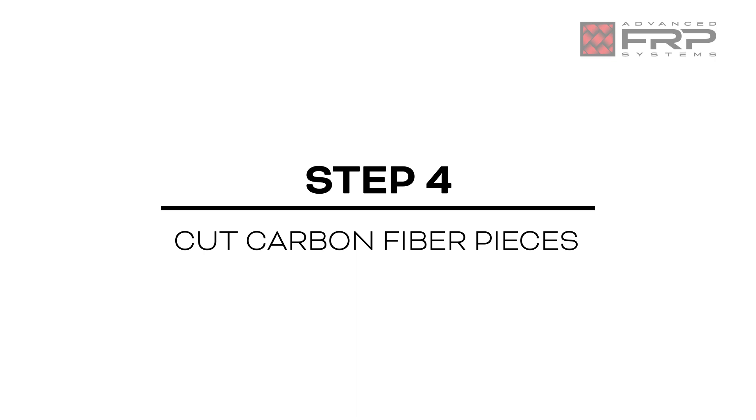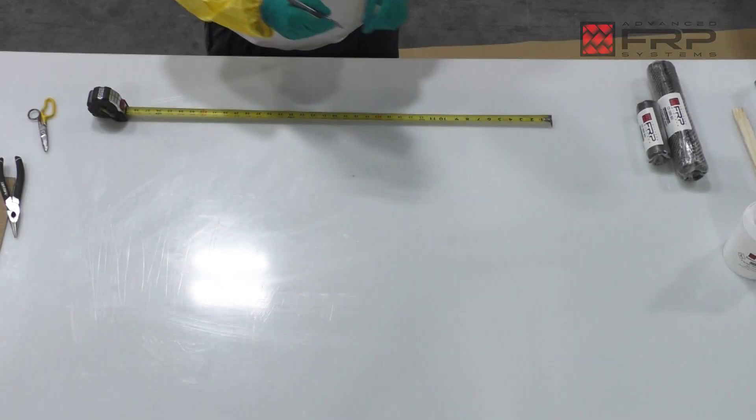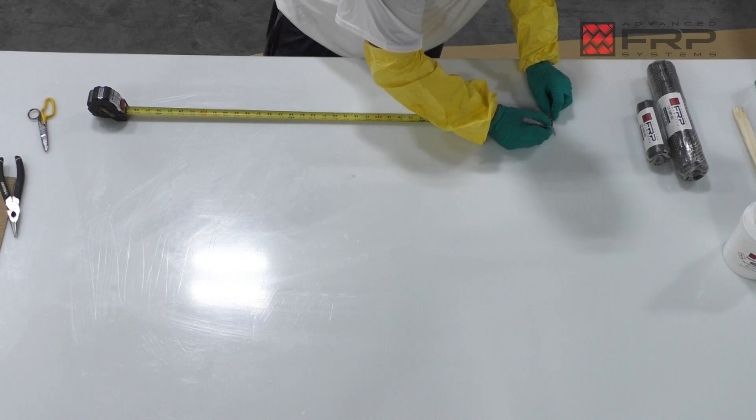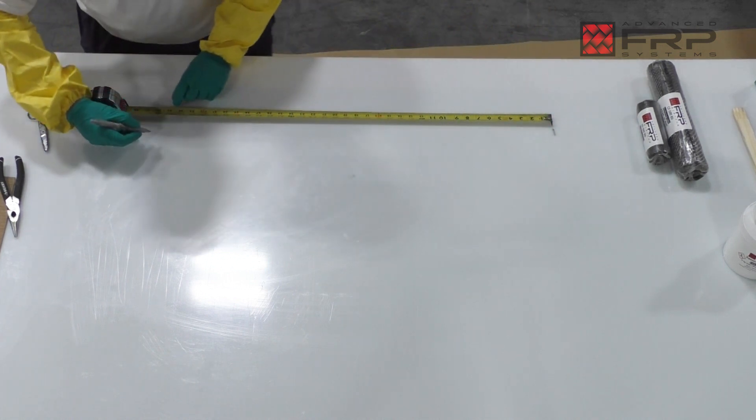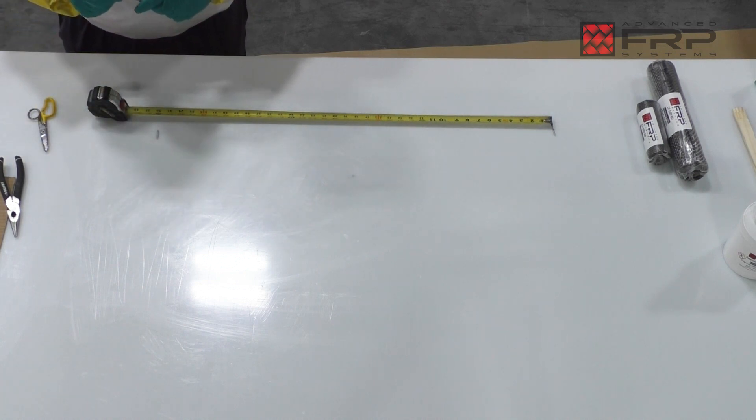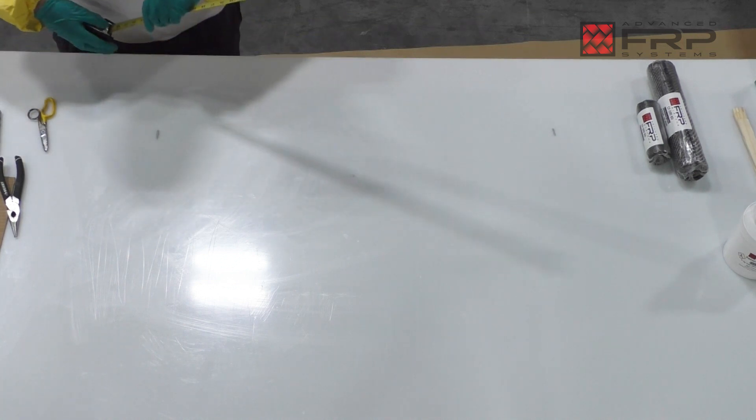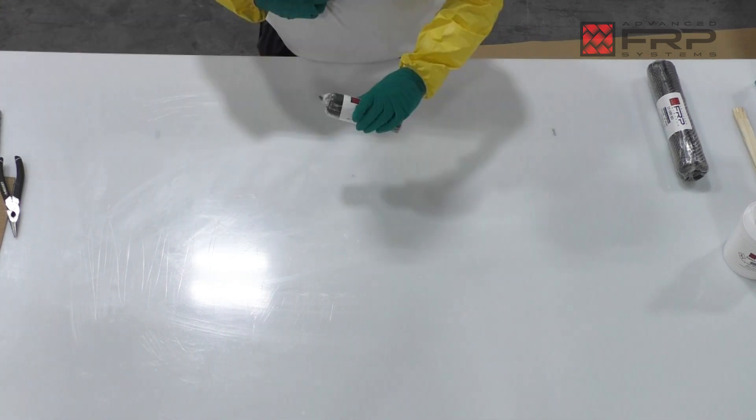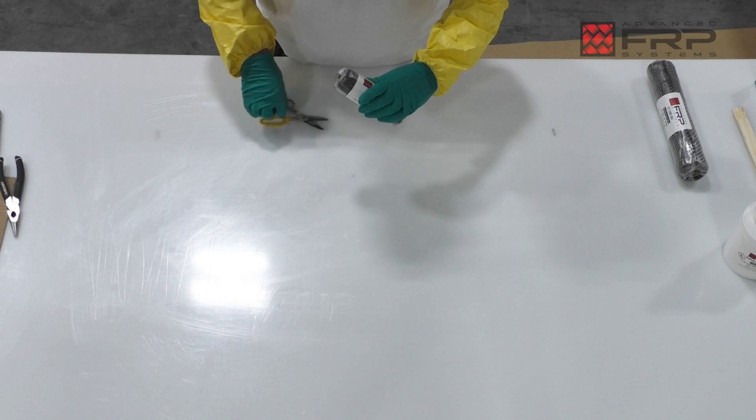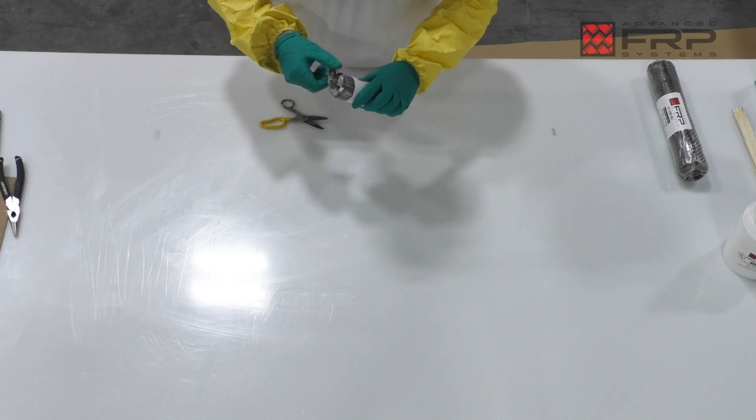The piece should provide a minimum of three layers around the circumference of the pipe plus six inches. If the pipe diameter is two inches or below, we recommend measuring and marking off three feet on a flat surface and cutting the carbon fiber to the required length. If the pipe diameter is above two inches, skip ahead to the next step and saturate all supplied carbon fiber fabric without cutting.